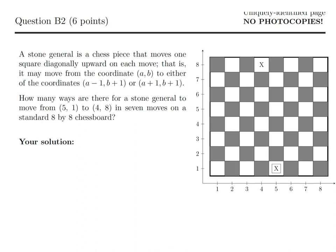A stone general is a chess piece that moves one square diagonally upward on each move — that is, it may move from coordinate (A, B) to either (A−1, B+1) or (A+1, B+1). How many ways are there for a stone general to move from (5,1) to (4,8) in 7 moves on a standard 8×8 chessboard? We are going from (5,1) to (4,8), and the moves are always diagonal. It has to be done in 7 moves.